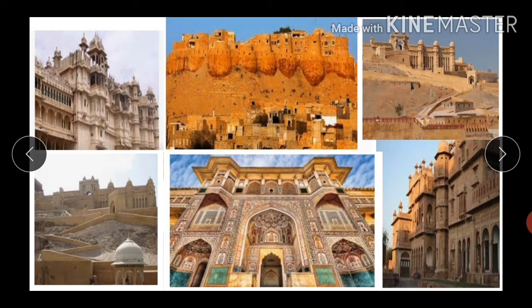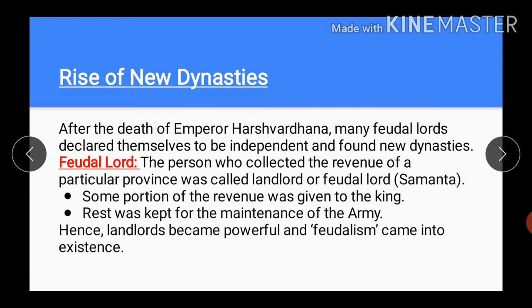Monuments constructed during the Rajput Age can be seen even today. To know about that era, let us learn about the main Indian dynasties of that time. Rise of new dynasties: after the death of Emperor Harshvardhana, many feudal lords declared themselves to be independent and founded new dynasties as per their choice. We have to understand first of all what a feudal lord means. The person who collected the revenue of a particular province was called a landlord or feudal lord, which was also called Samanta.